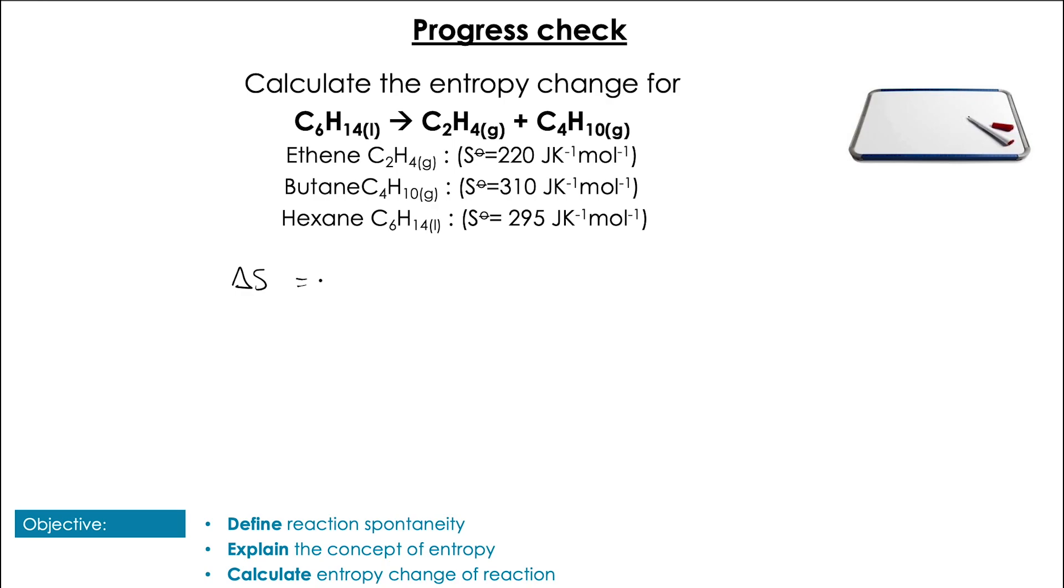So remembering our entropy change is equal to the entropy of the products minus the entropy of the reactants so it's going to be 220 plus 310 for our products minus 295 our reactants which is 235 joules per kelvin per mole. Again something we'd expect considering the increase in the number of particles and the change from liquid to gases in the products.